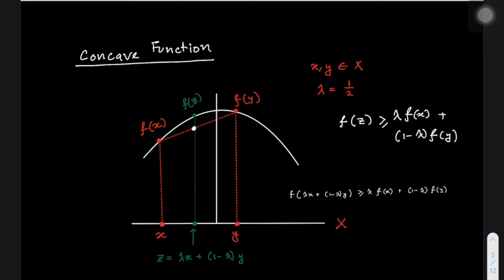This is going to be true for all possible lambdas. For every possible lambda, f of z is going to be within this region, and these are going to be the linear combinations of f of x and f of y. We can see that all of these points are either going to be greater than this combination, or equal to it at the two endpoints. Hence this is a concave function because it satisfies the definition.